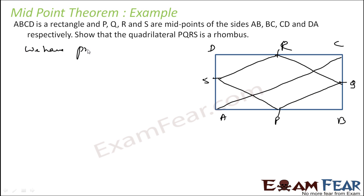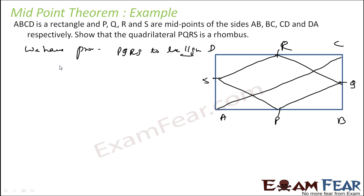We have to prove PQRS is a rhombus — that means all sides are equal. We have already proved that PQ is equal to SR and PS is equal to RQ. So we just need to prove that two adjacent sides are equal.